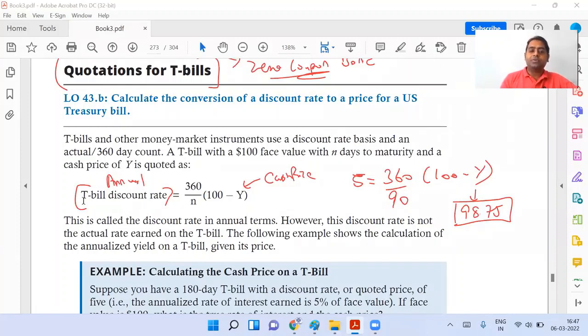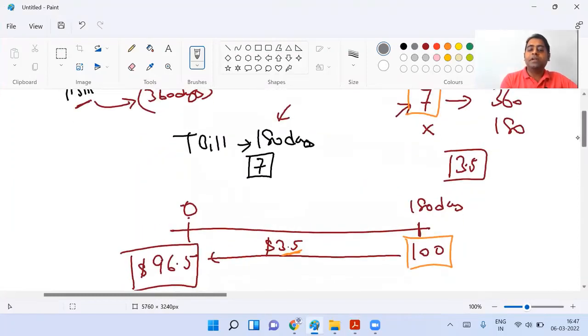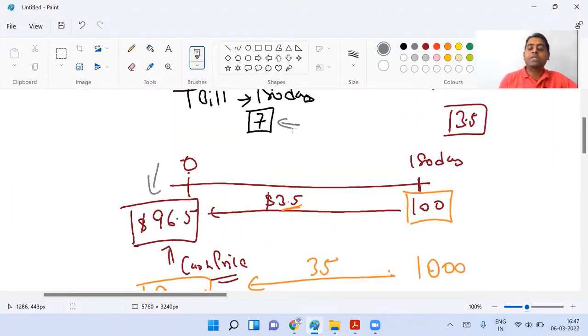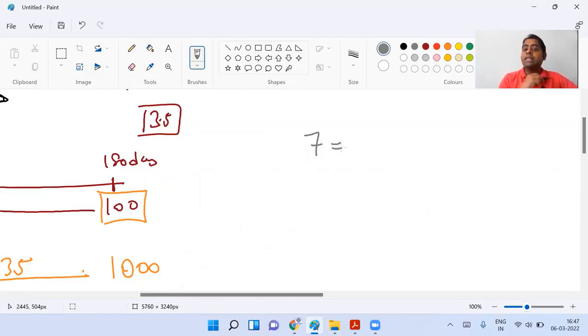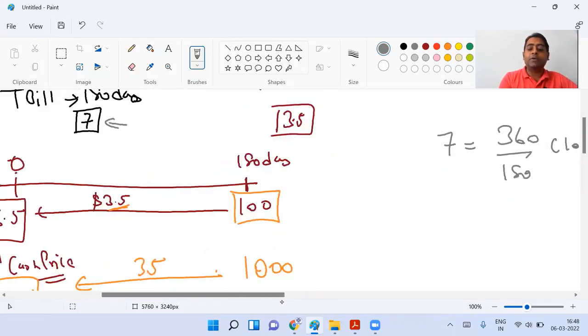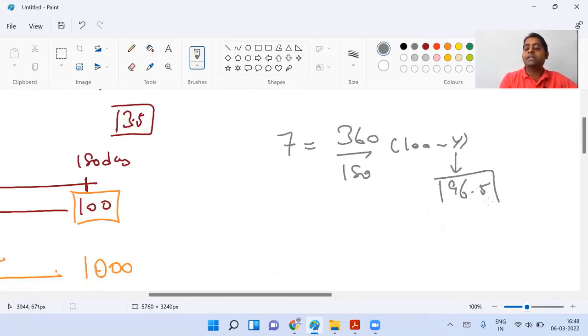So it's the same thing, nothing different. T-bills and other money market instruments follow actual by 360 day. N over here represents the maturity of the bond. In my example, the maturity left is only 90 days. Let us also cross check this number. The first calculation that we did, the cash price, the quoted price was 7% for a 180-day bond and we got 96.5. So I'm just using the formula in the book. 360, how much time was my bond? 180 days, 100 minus Y. Cross check if you're getting this number which is 96.5. I want everybody to cross check. Are you guys getting this number?